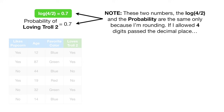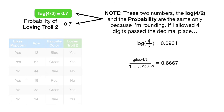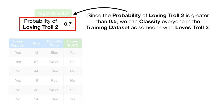Note: these two numbers — the log of 4 divided by 2 and the probability — are the same only because I'm rounding. If I allowed four digits past the decimal place, then the log of 4 divided by 2 would equal 0.6931 and the probability would equal 0.6667. Since the probability of loving Troll 2 is greater than 0.5, we can classify everyone in the training data set as someone who loves Troll 2.